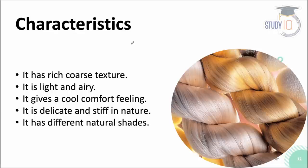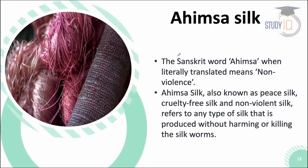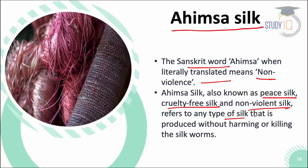The characteristics of Ahimsa silk include a rich, coarse, and rough texture. It is light and airy, making it suitable for both summer and winter — you get a cool, comfortable feeling. It has a delicate yet stiff drape and fall, and comes in natural shades, including the signature natural gold color.